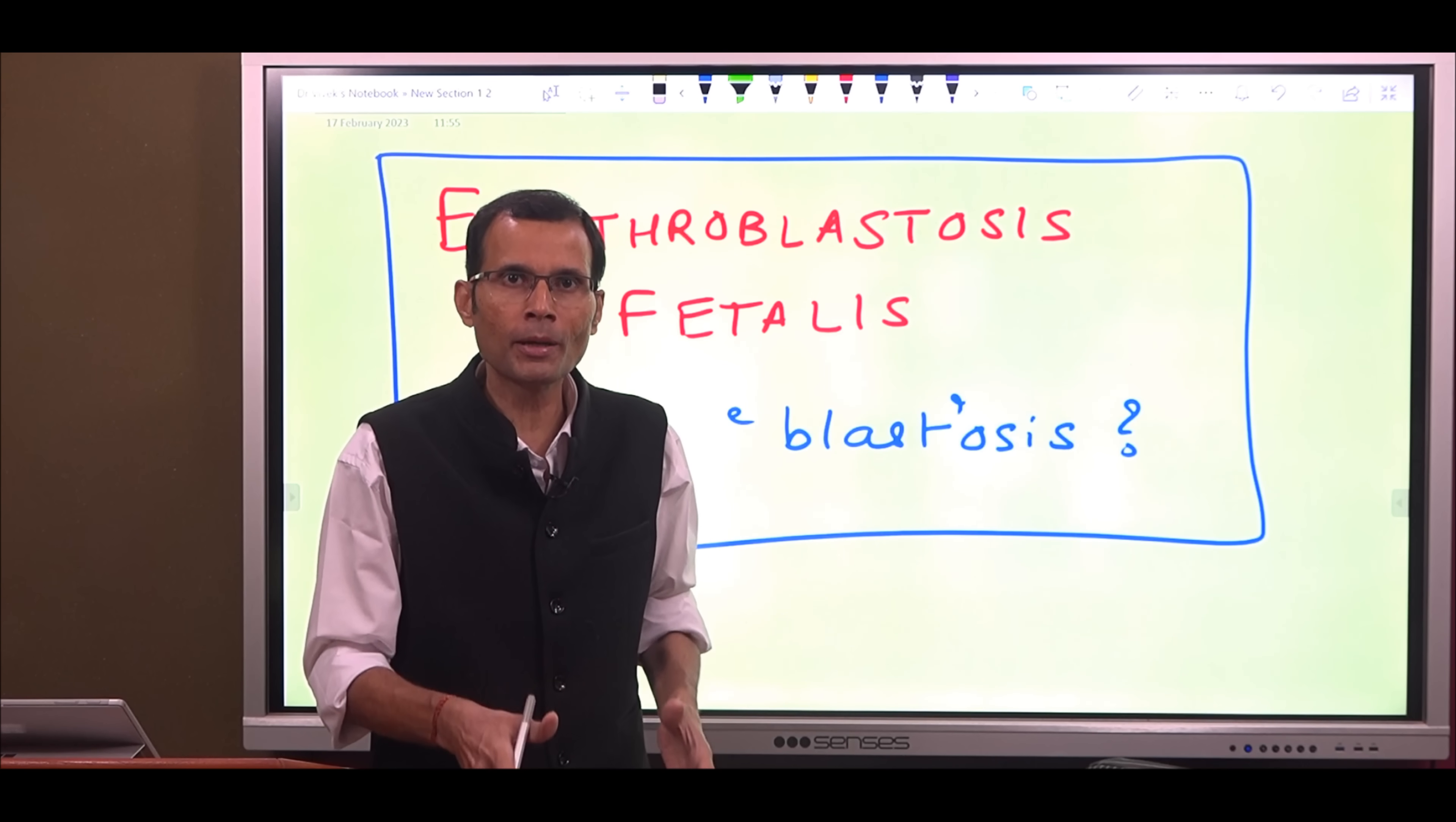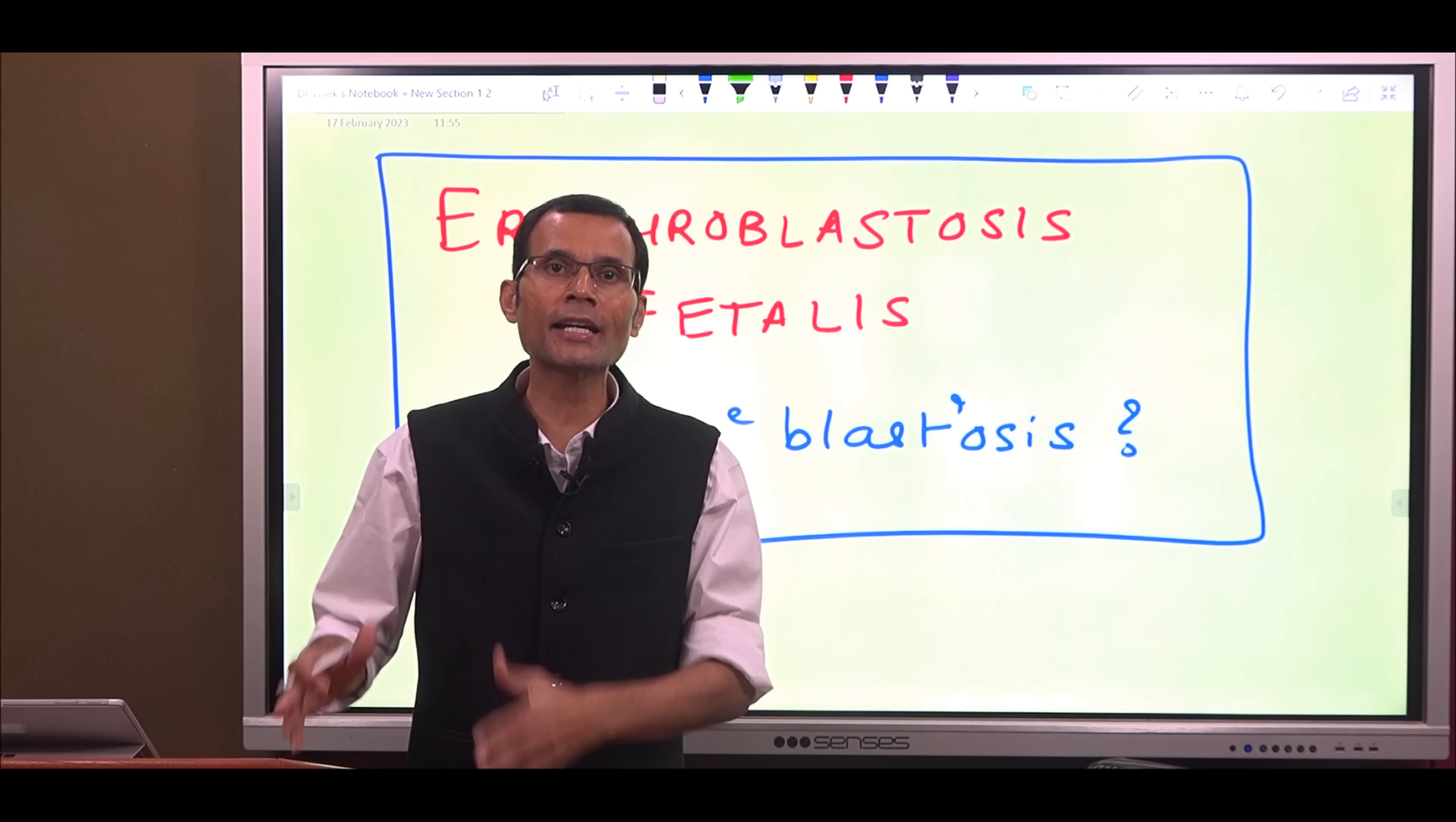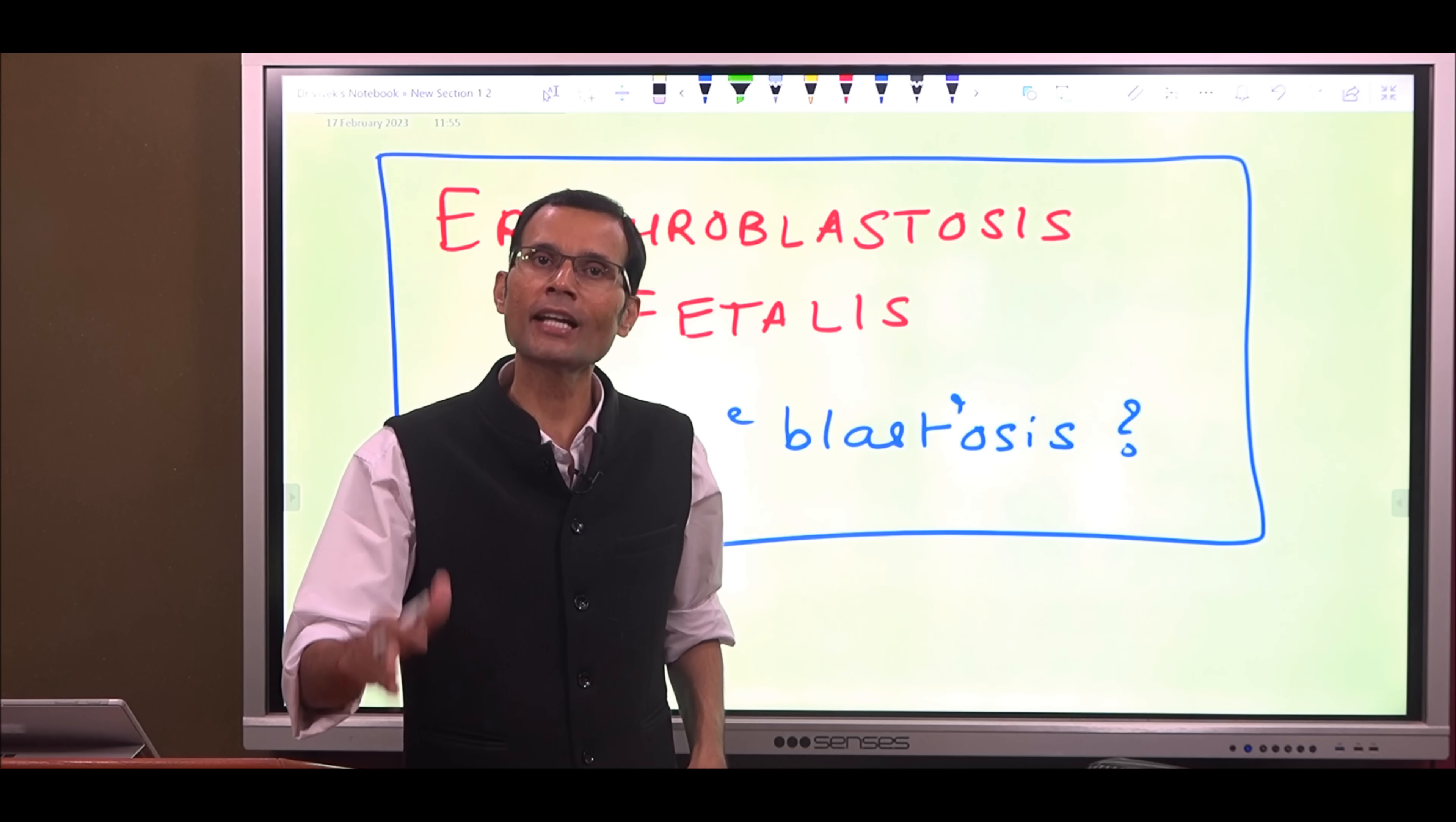So in peripheral blood you will see a lot of those immature nucleated precursor stages of the RBCs, the erythroblasts, and therefore the condition is named erythroblastosis fetalis.